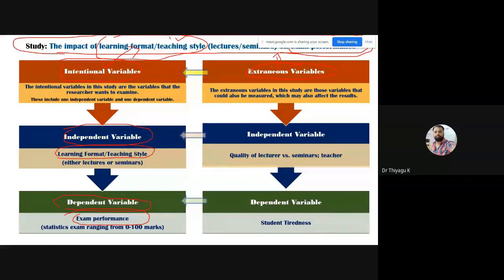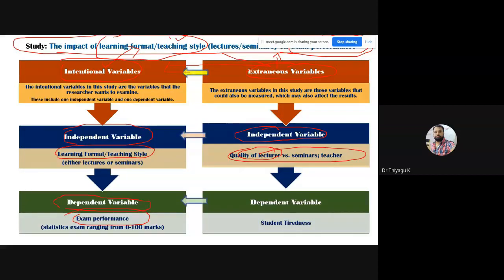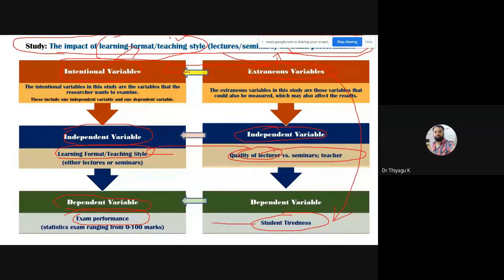In the context of the extraneous variable, this variable we are not intentionally finding, but the third variable may affect the influence of the independent variable on the dependent variable. Even the extraneous variable has some kind of independent variable side — for example, the quality of the teacher. Even if you are adopting a very good strategy but are not good in communication skill, the quality of teaching also may affect the learning format. Also on the dependent variable side, the student tiredness before the examination may influence exam performance. Therefore, we have to nullify this kind of third variable effect using techniques like partial correlation.